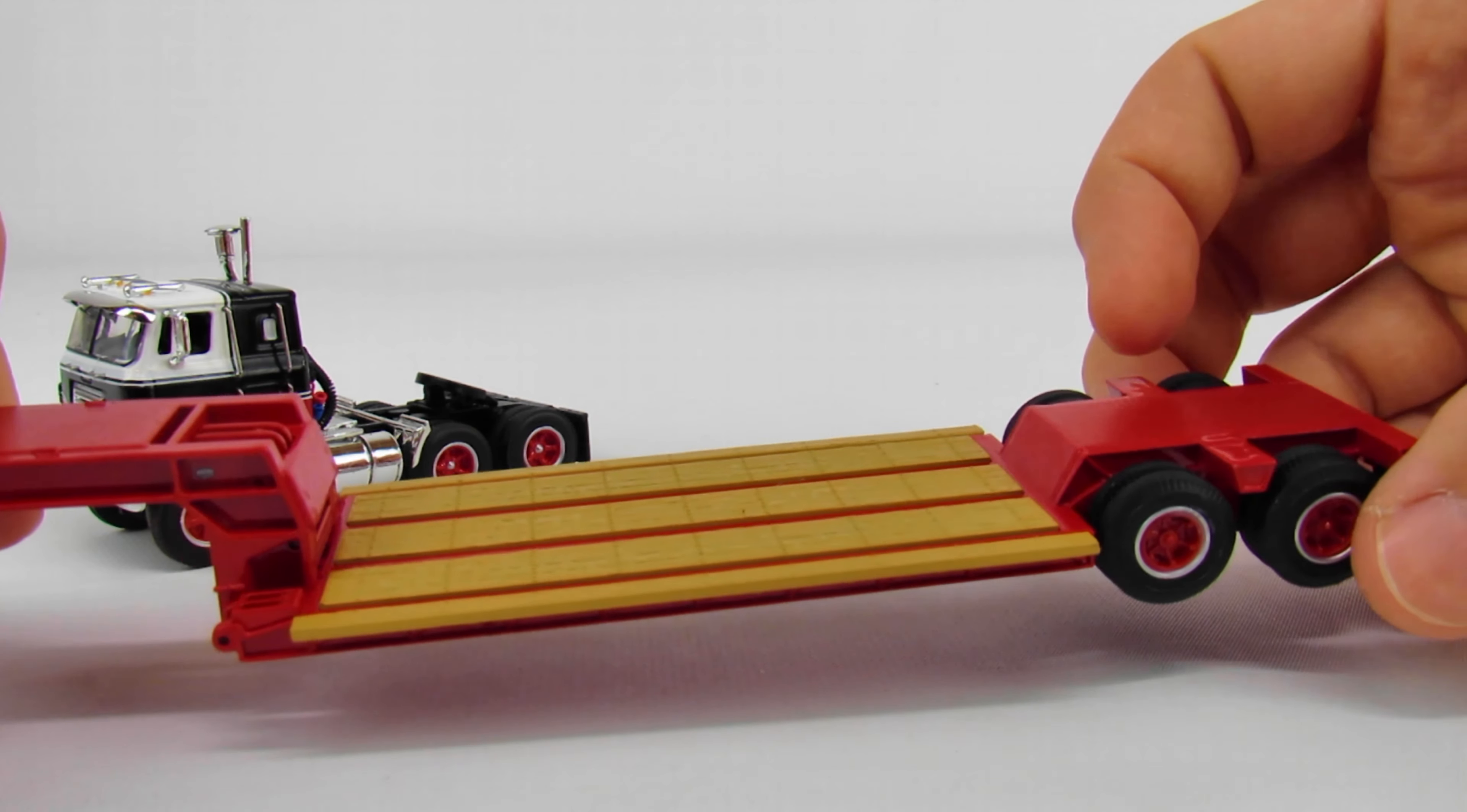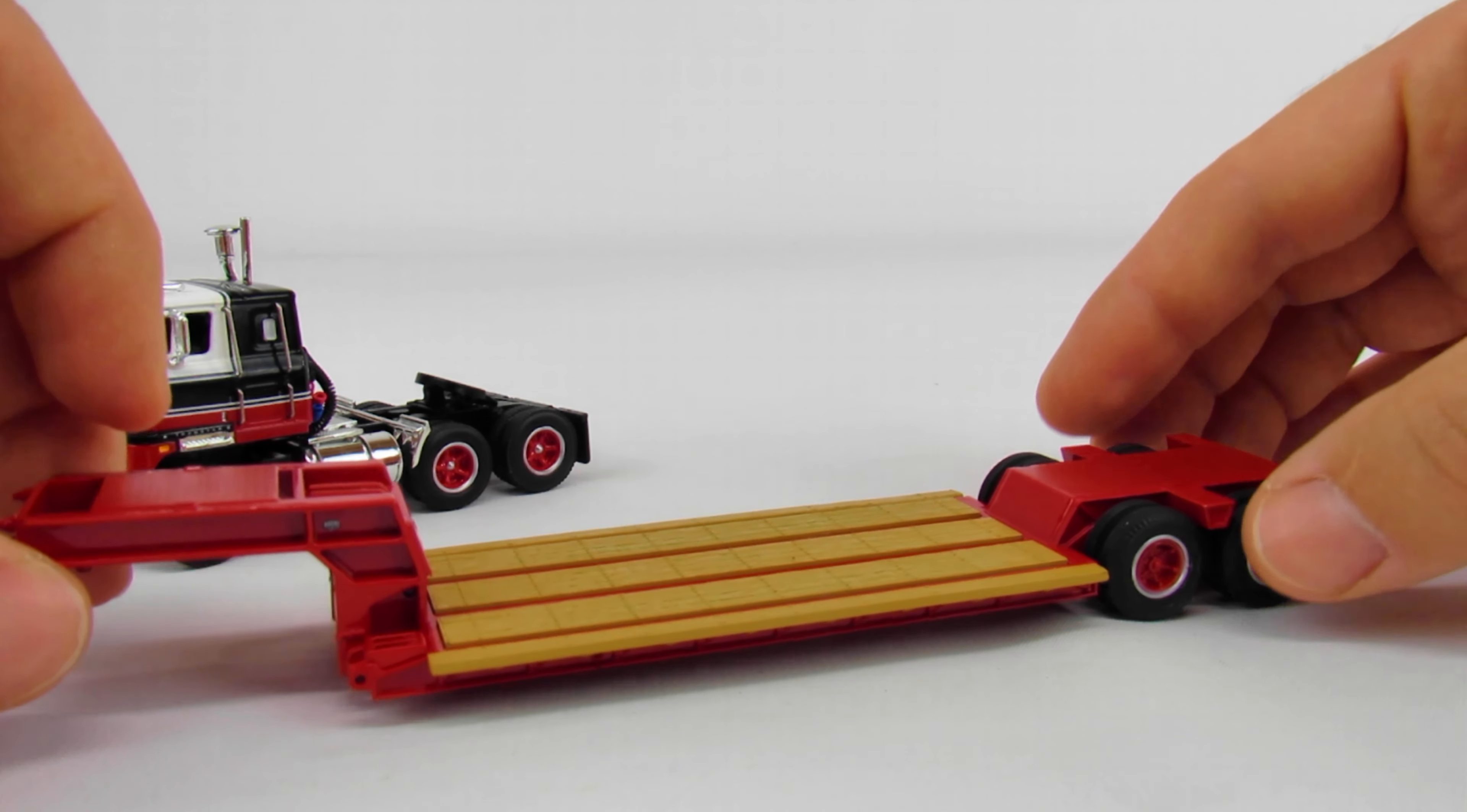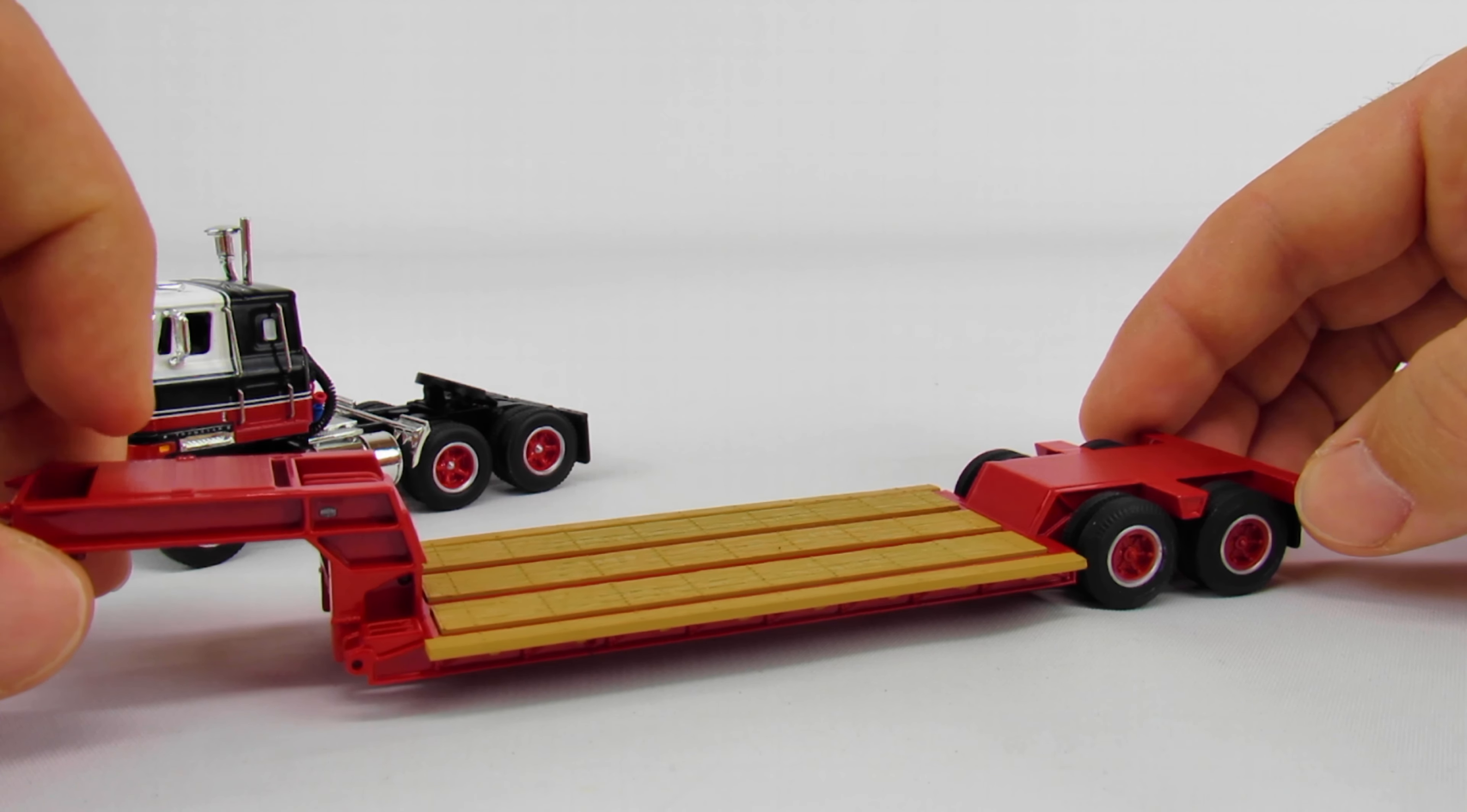Generally speaking, nothing is built the way it used to be. If you got a 40-ton lowboy in the mid-70s or early 70s, it was a 40-ton lowboy on paper, but you could probably put a hundred tons on it and it would still handle it because everything was just built so heavy back in the day.